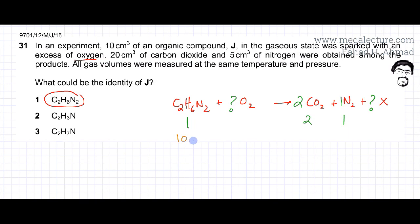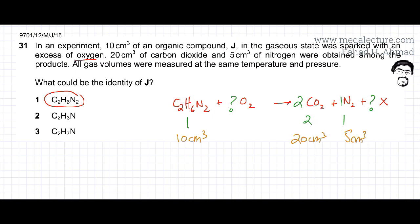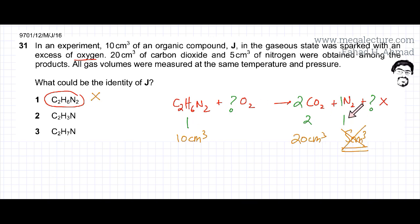One molecule produces two carbon dioxide molecules and one N₂ molecule. The question says 10 cm³ of the compound produces 20 cm³ of carbon dioxide and 5 cm³ of nitrogen. For gases, mole ratio and volume ratio are exactly the same. Our incomplete equation gives a mole ratio of 2:1 for CO₂ to N₂, meaning 20 cm³ of CO₂ should produce 10 cm³ of N₂ — but that is not the case here.